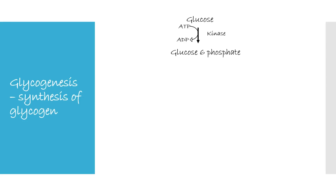In glycogenesis, the first step is glucose being converted to glucose-6-phosphate. A phosphorus group is added to glucose using ATP, which is converted to ADP. This reaction is catalyzed by hexokinase in muscle and by glucokinase in liver. Since this reaction yields a high energy product, it is irreversible. This reaction requires magnesium for its activity.